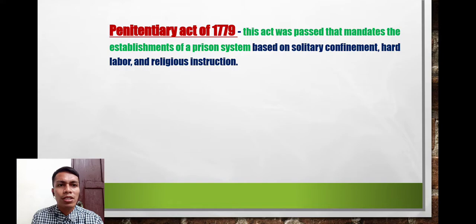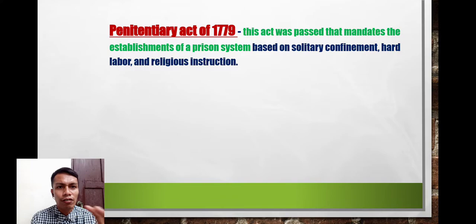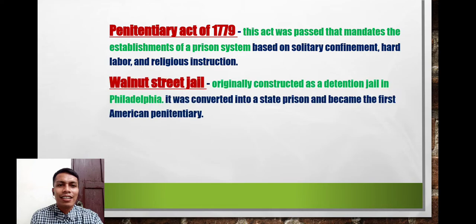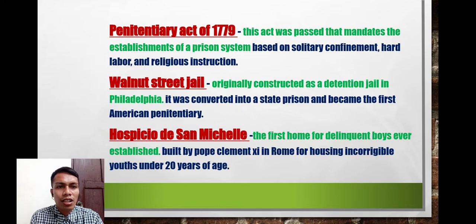The Penitentiary Act of 1779 mandated the establishment of a prison system based on solitary confinement, hard labor, and religious instruction. The Walnut Street Jail was originally constructed as a detention jail in Philadelphia. It was later converted into a state prison and became the first American penitentiary.